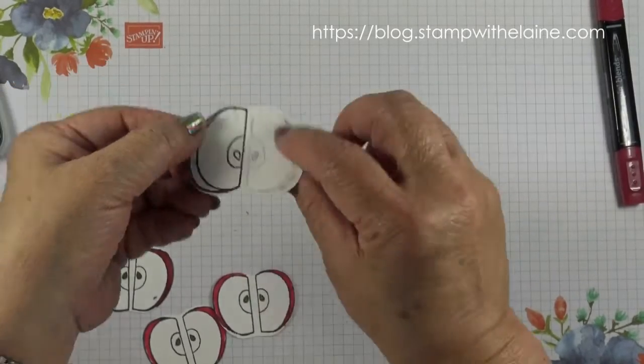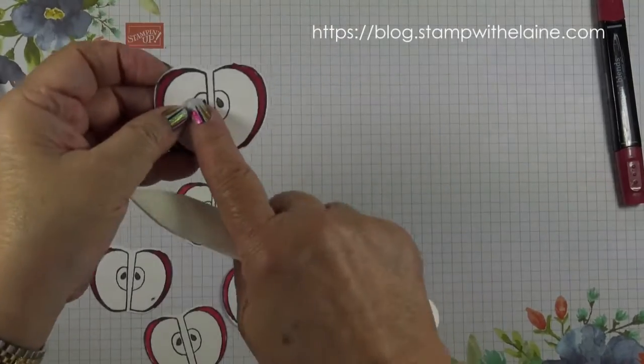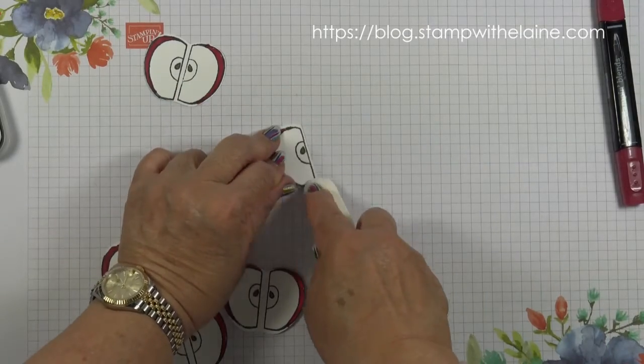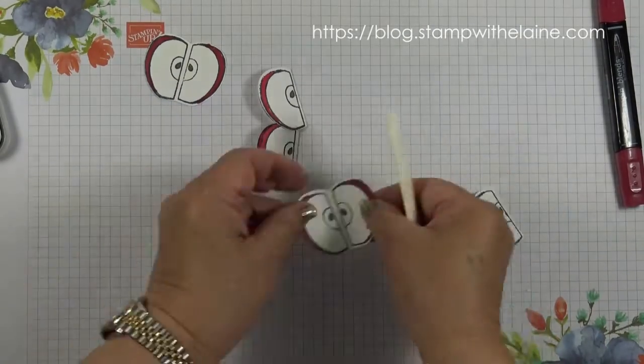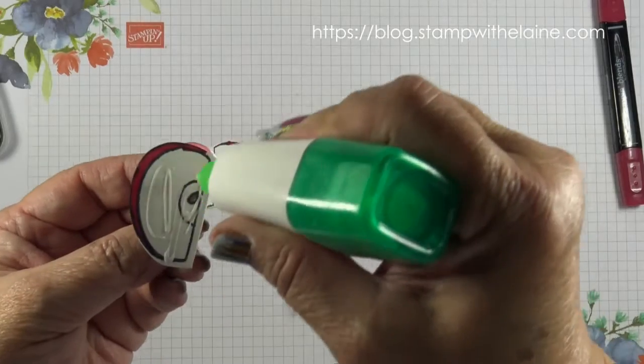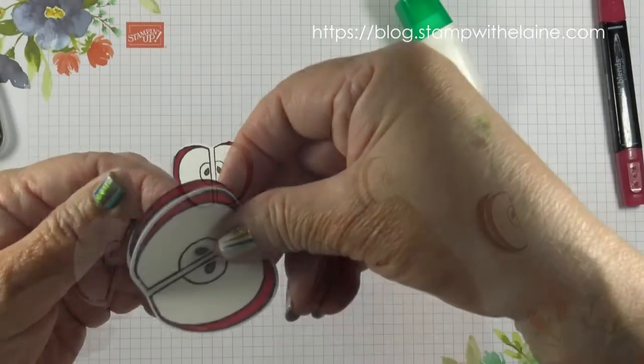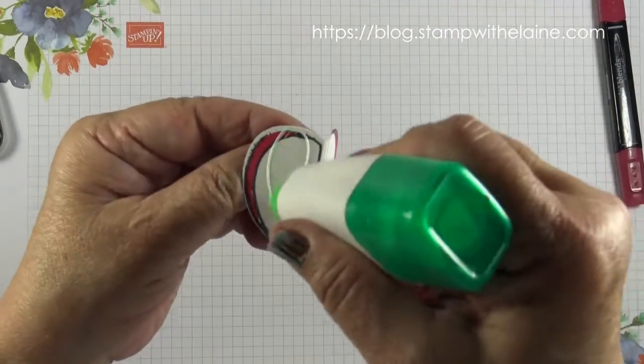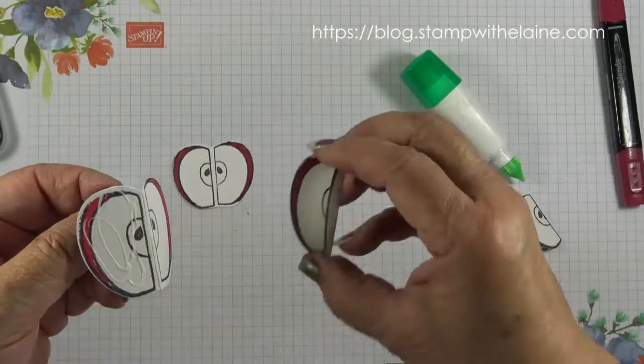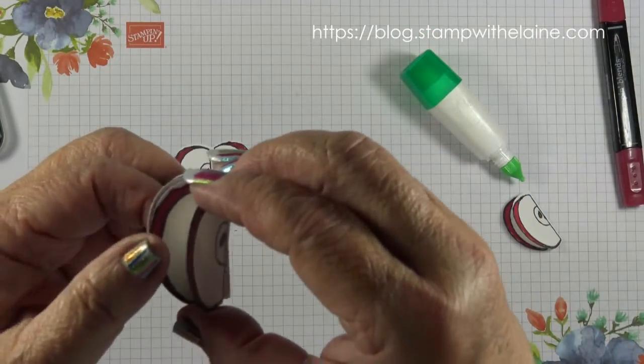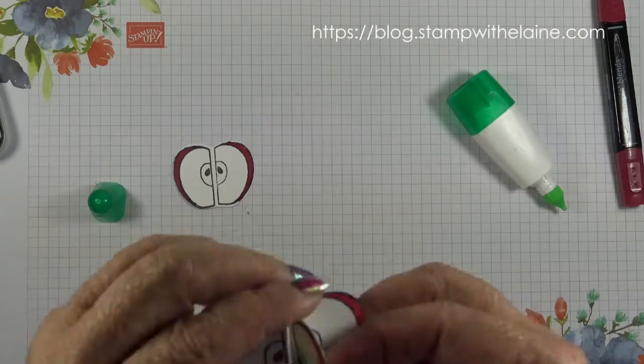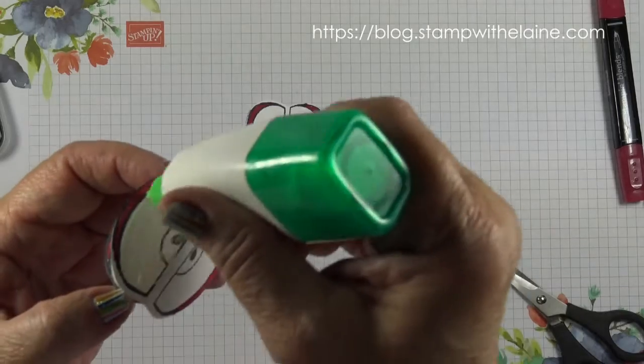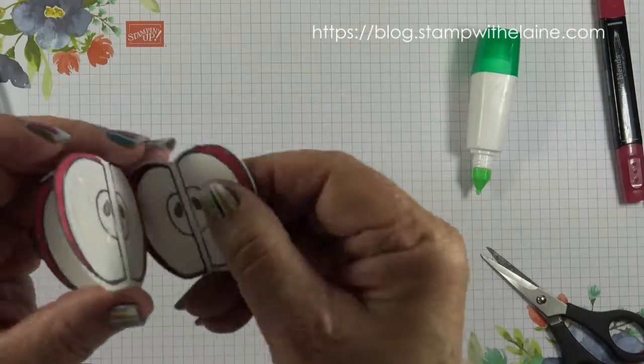So that's the one that has to go on the bottom. So you don't need to score that. Reinforce the score lines on that. But you do on these. And I know you've coloured it and then you're going to have to glue it together. So apply adhesive on one side and glue that together. And glue this one to the bottom of this.